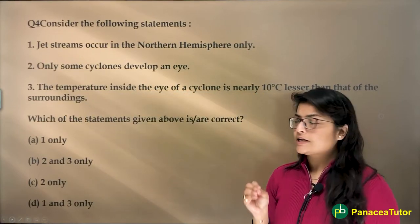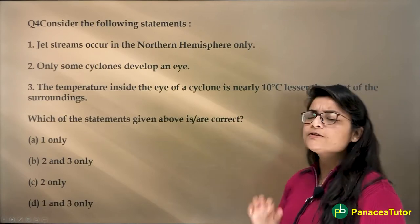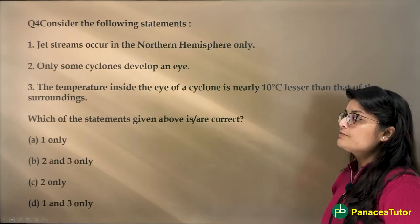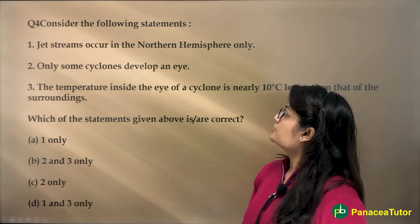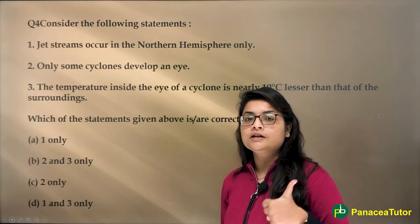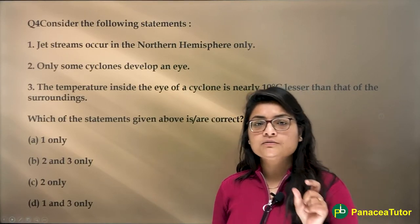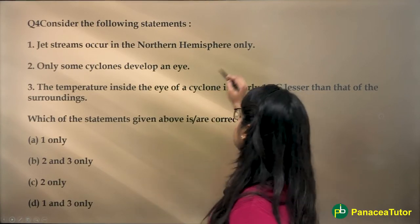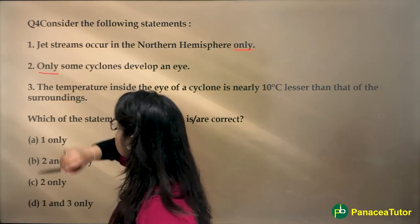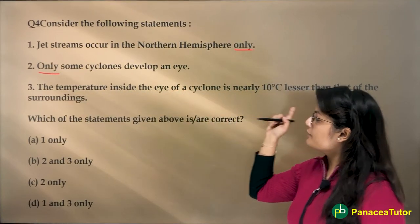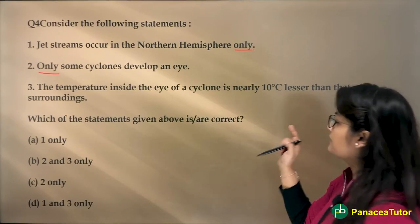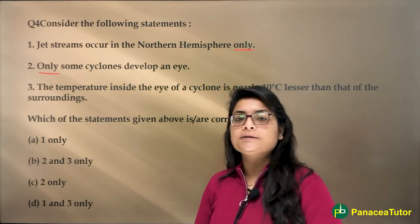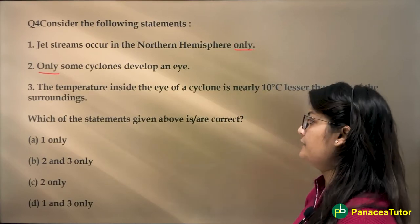The next question is again from climatology. Consider the following statements: number one — jet streams occur in the Northern Hemisphere only; number two — only some cyclones develop an eye; number three — the temperature inside the eye of the cyclone is nearly 10 degrees Celsius lesser than that of the surroundings. Whenever you observe the word 'only' in UPSC, some analysis is needed. Pause the video and try attempting the question.